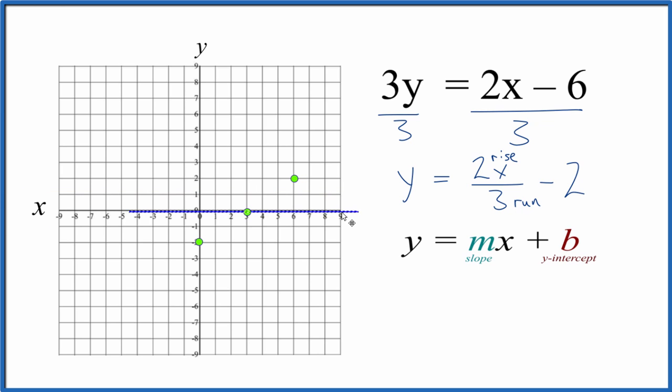Let's put a line through that. And then we'll put arrows on it to show it goes to infinity. And that's the graph for 3y equals 2x minus 6.